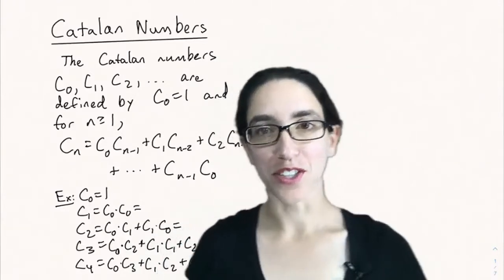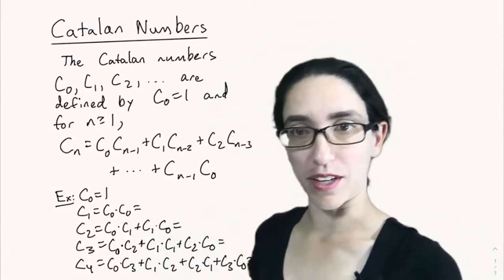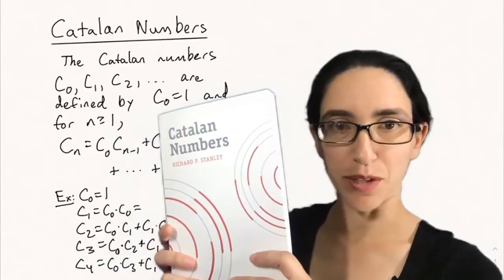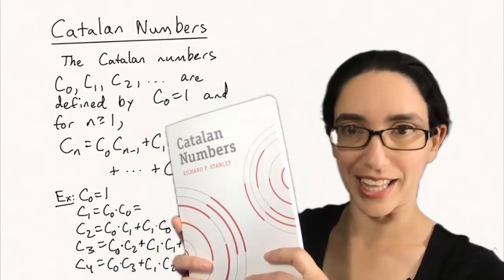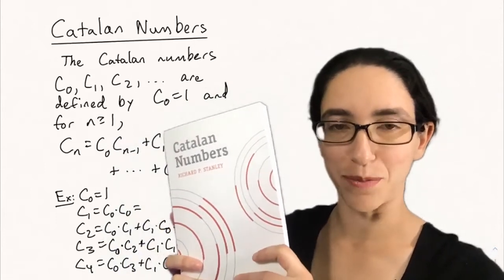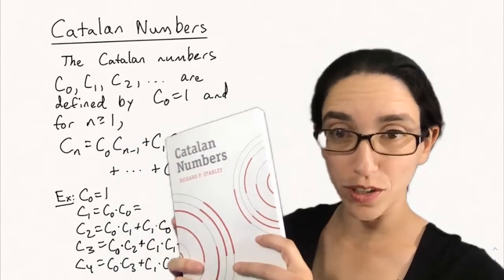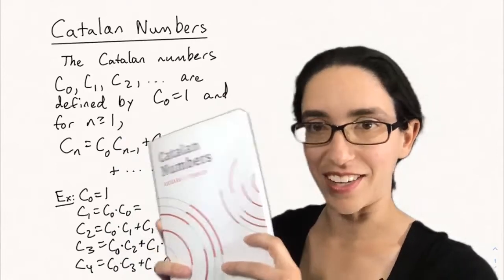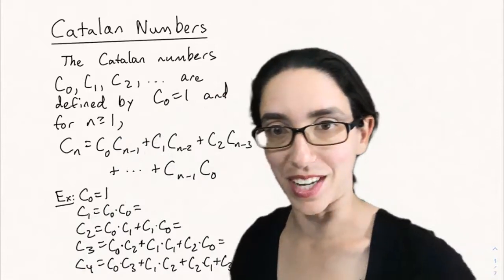The Catalan numbers are extremely useful in combinatorics. They come up in a lot of different places. Richard Stanley, a famous combinatorialist, wrote a book called Catalan Numbers just on this particular sequence that has 214 combinatorics applications listed, and I'm sure there are more waiting to be discovered.